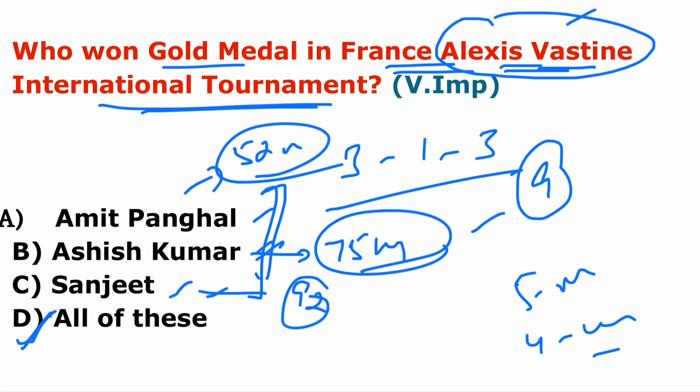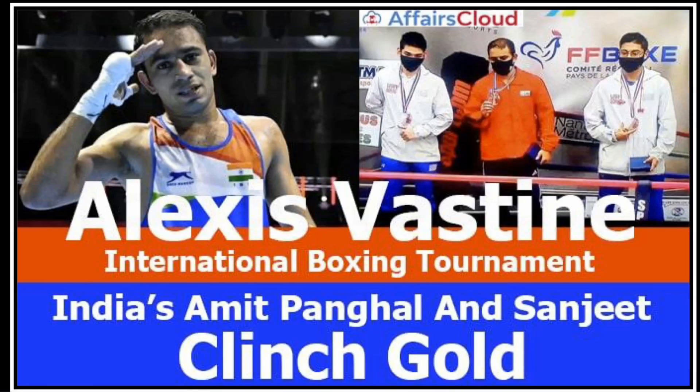This tournament is organized by the International Boxing Association — AIBA. The tournament is named after French boxer Alexis Vastine, a 2012 Olympics bronze medalist who died in a helicopter accident. The interim president of AIBA is Dr. Mohammad. AIBA headquarter is in Lausanne, Switzerland.